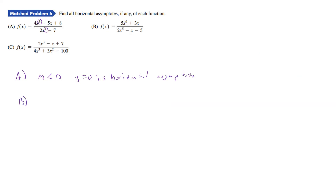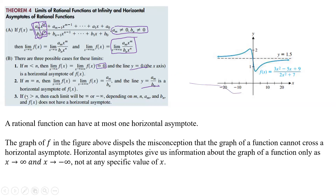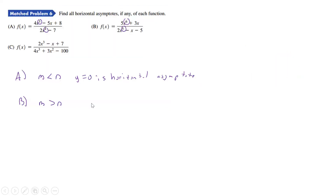For part b, we have degrees 6 and 5, so m is greater than n. That's the case where there is no horizontal asymptote.